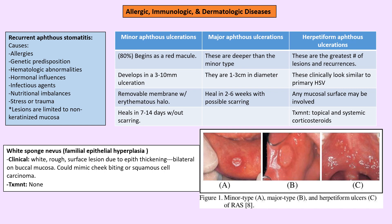Aphthous ulcers: if asked the most common cause, the answer is unknown. However, predisposing factors include genetic factors, allergies, hormonal influences, nutritional imbalances, and stress. There are three types: minor, major, and herpetiform. Minor is small — less than one centimeter — and heals without scarring within two weeks.